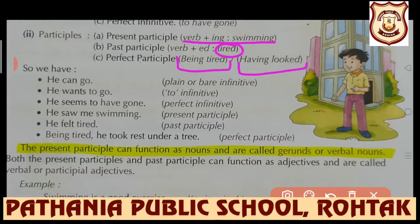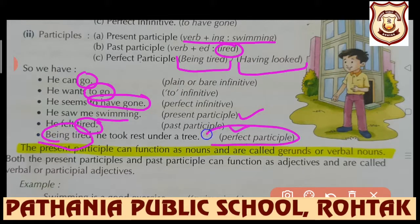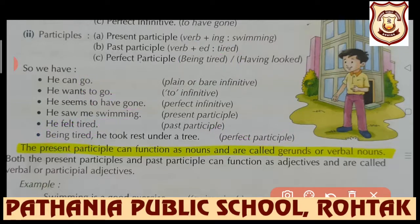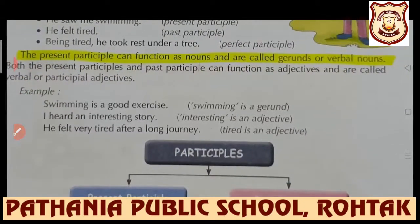Let's take examples using different infinitives and participles. 'He can go' - 'go' is bare infinitive. 'He wants to go' - to-infinitive. 'He seems to have gone' - perfect infinitive. 'He saw me swimming' - present participle. 'He felt tired' - past participle. 'Being tired' - perfect participle. The present participle can function as a noun and is called a gerund or verbal noun. Both present and past participles can function as adjectives and are called verbal or participial adjectives.